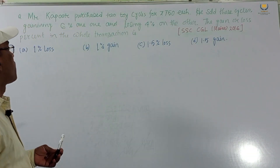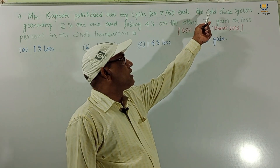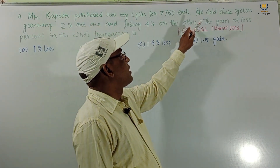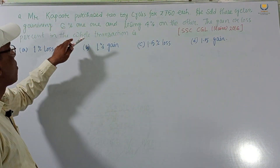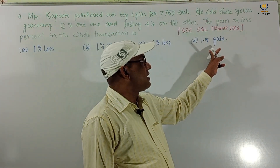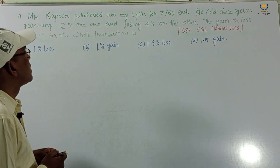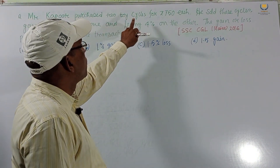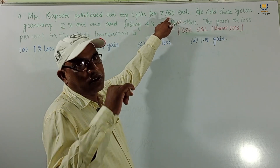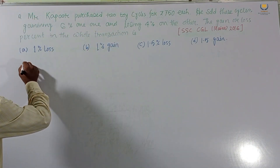Now consider a different type of problem. Mr. Kapoor purchased two toy cycles for rupees 750 each. He sold these cycles, gaining 6 percent on one and losing 4 percent on the other. What is the gain or loss percent in the whole transaction? This was from SSC CGL Mains 2016. Total cost price is 2 × 750 equals 1500 rupees.